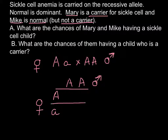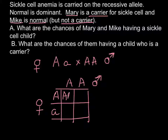Now we build the Punnett square. The genotypes fill in as: capital A / capital A, capital A / capital A, small a / capital A, and small a / capital A.